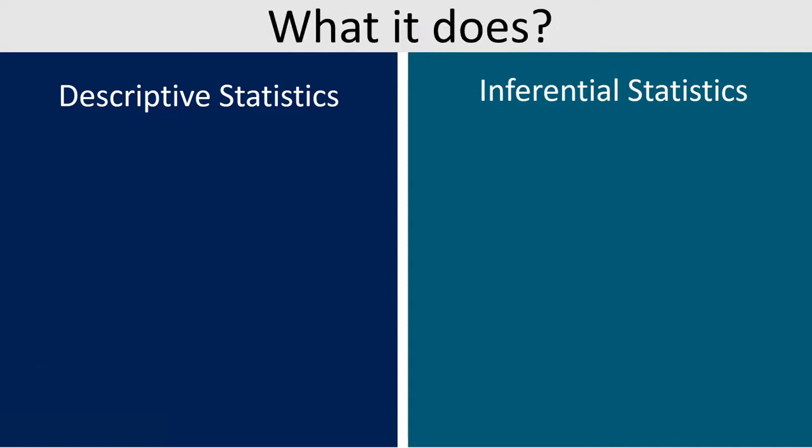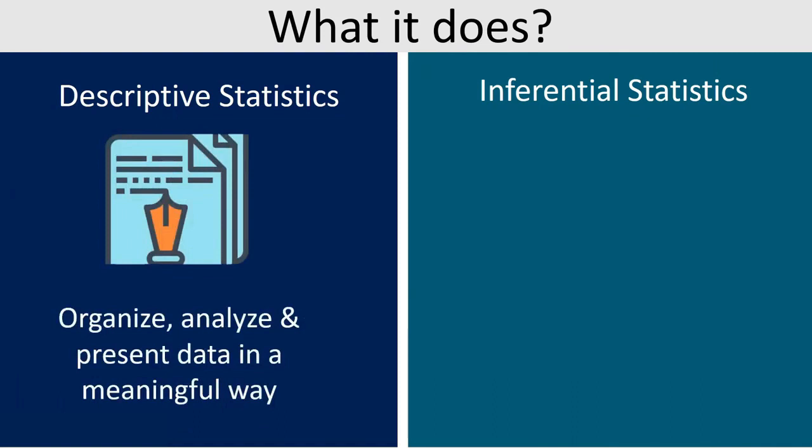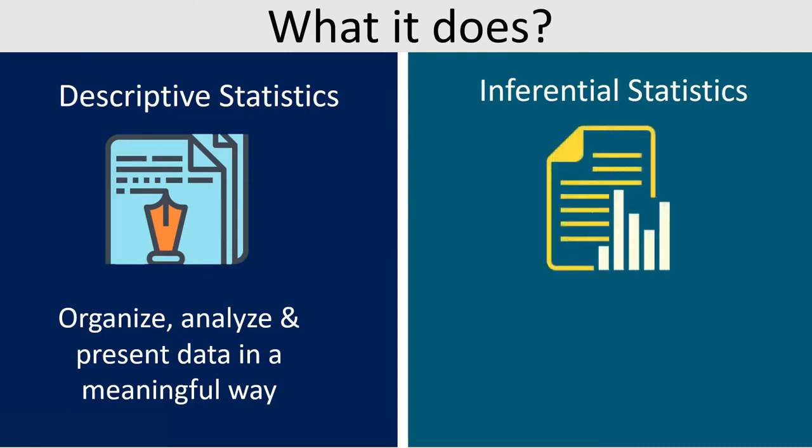What it does: Descriptive statistics collects, organizes, analyzes and presents data in a meaningful way. Whereas, inferential statistics compares data, tests hypothesis and makes predictions of the future outcome.